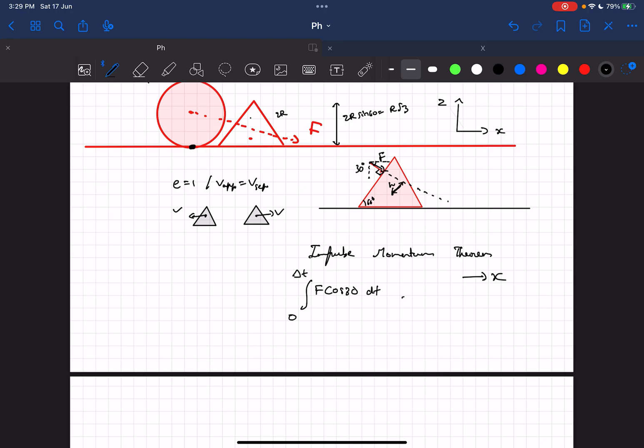So integral F cos 30 dt from 0 to delta t. This would be the impulse of the horizontal component due to F, and this would be equal to the change in momentum of the body. That would be mv minus minus mv. Now if you solve this, as we know the force F is constant, we can take it out of the integral. So we'll get the value of modulus of force F to be 4mv upon root 3 delta t.